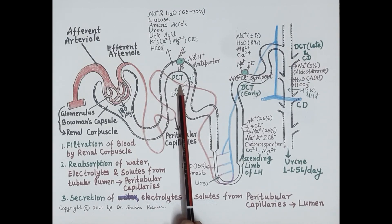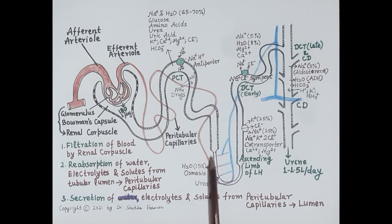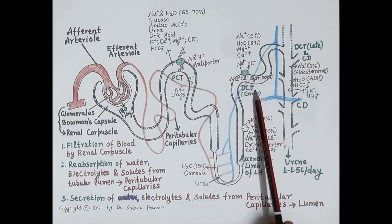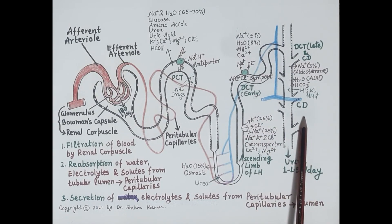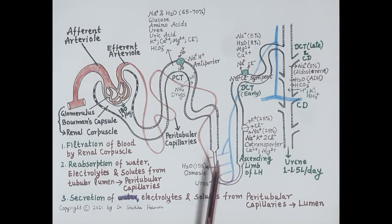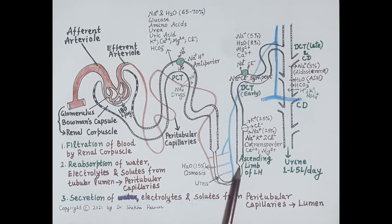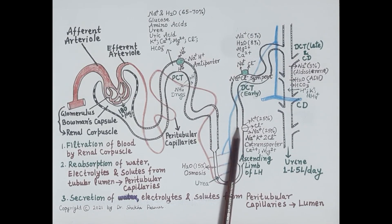As shown in the diagram, the nephron is made up of four main parts: the proximal convoluted tubule, the loop of Henle, the distal convoluted tubule, and the collecting duct. The loop of Henle is further divided into the thin descending limb, the thin ascending limb, and the thick ascending limb of the loop of Henle.